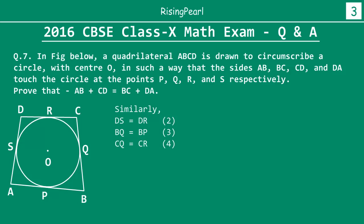Similarly, BP equals BQ — these two will be equal. In the same way, DS equals DR, and CQ equals CR. So we have four equations: AS = AP (equation 1), BQ = BP (equation 2), DS = DR (equation 3), and CQ = CR (equation 4). What we are going to do is simply add them all.